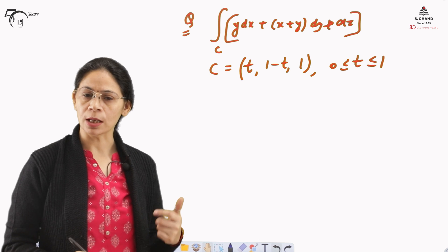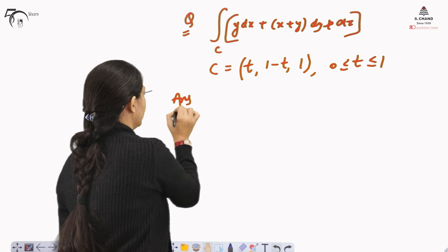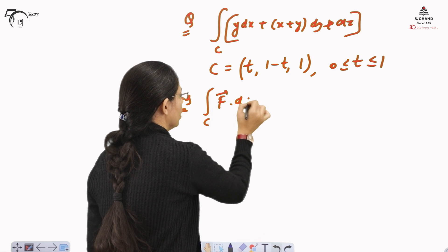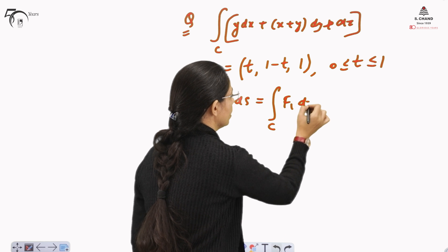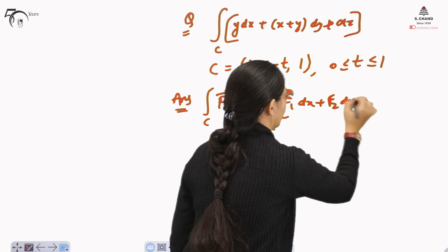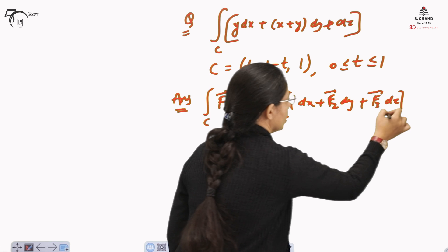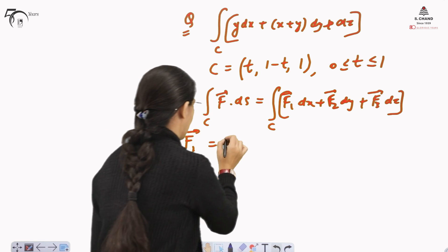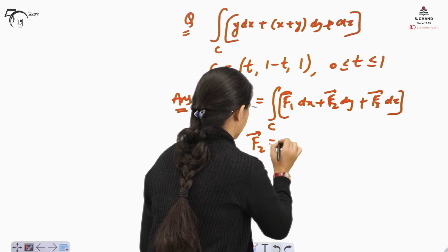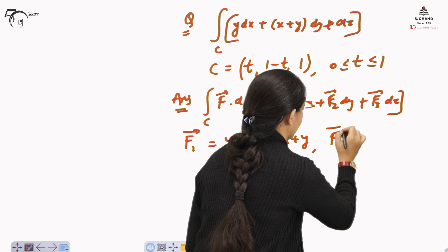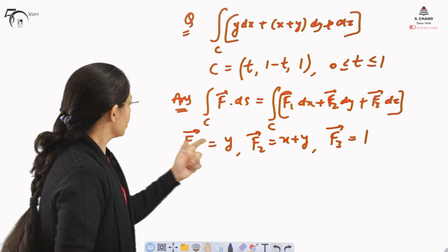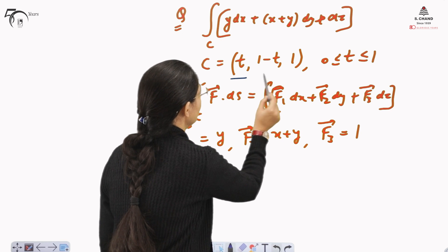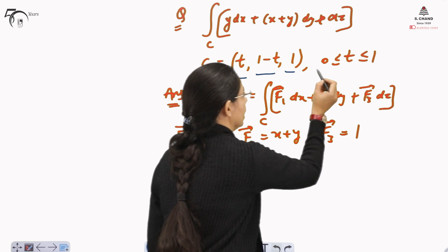If we compare this with the standard form — the integral over C of F1·dX plus F2·dY plus F3·dZ — we can identify that F1 equals Y, F2 equals X plus Y, and F3 equals 1, since the coefficient of dZ is 1. So all three components F1, F2, F3 have been identified. The parametric form is already given as C equals (T, 1 minus T, 1), with T from 0 to 1.